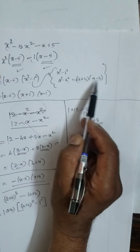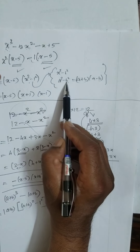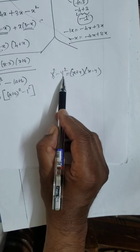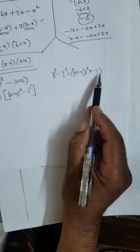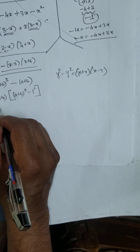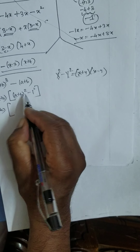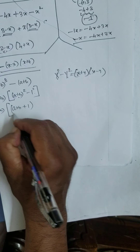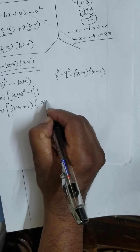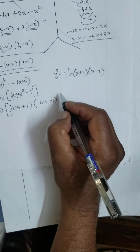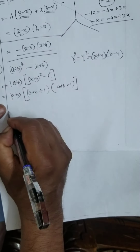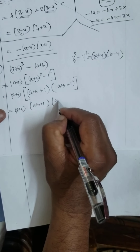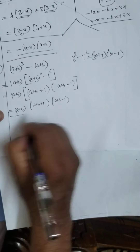First number square minus second number square equals first number plus second number times first number minus second number. Same thing here: first number square minus second number equals first number plus second number times first number minus second number. Therefore the answer is: (a+b) · [(a+b) + 1] · [(a+b) − 1]. This is the factors.